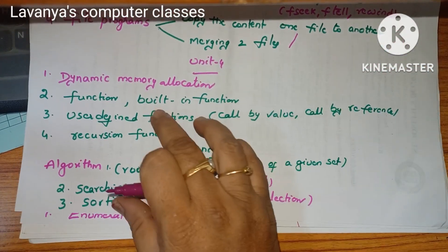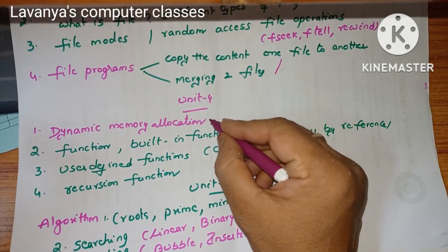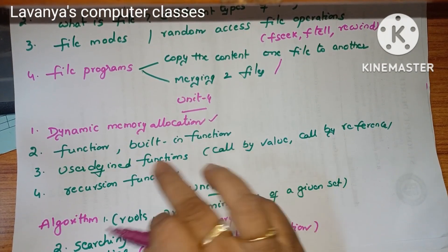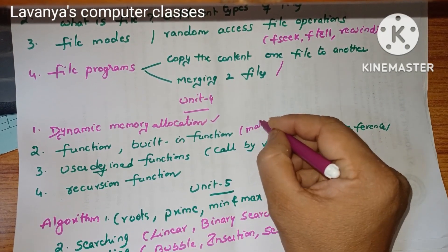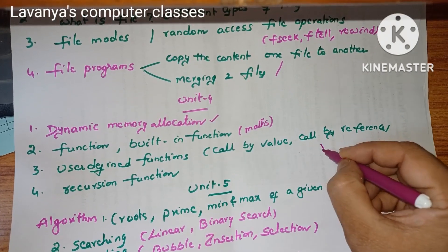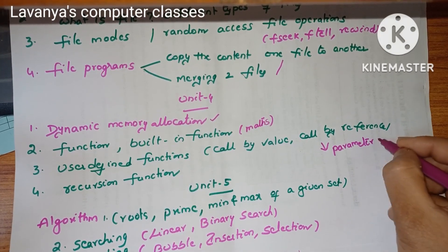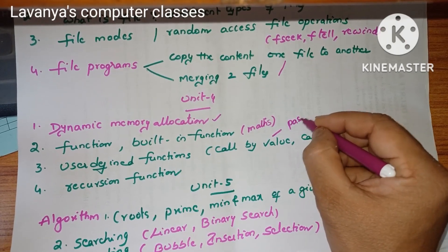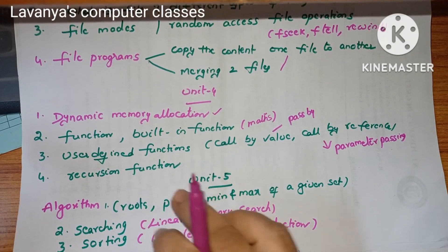Unit 4 covers functions and dynamic memory allocation. The first question: explain dynamic memory allocation — very important. What is a function? Types of functions: built-in functions and user-defined functions. For built-in functions, string handling is already covered; concentrate on mathematical functions. Then call by value and call by reference, also called parameter passing techniques. Pass by value and pass by reference are key topics to concentrate on.